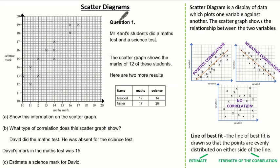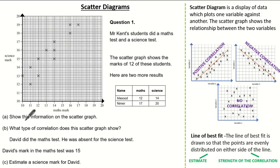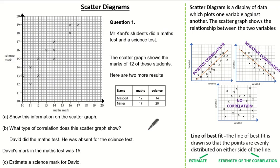Let's use this knowledge and look at some past exam questions. The question states that Mr. Kent's students did a maths test and a science test. The scatter graph shows the marks of 12 of these students. Here are two more results — show this information on the scatter graph. What type of correlation does the scatter graph show? David did the maths test but was absent for the science test. His mark in the maths test was 15 — estimate a science mark for David. See if you can give it a go and press pause if you need.